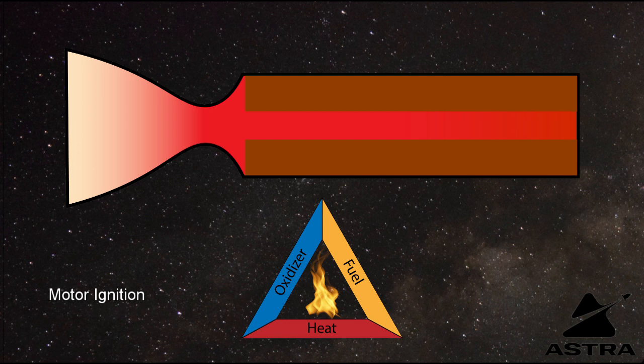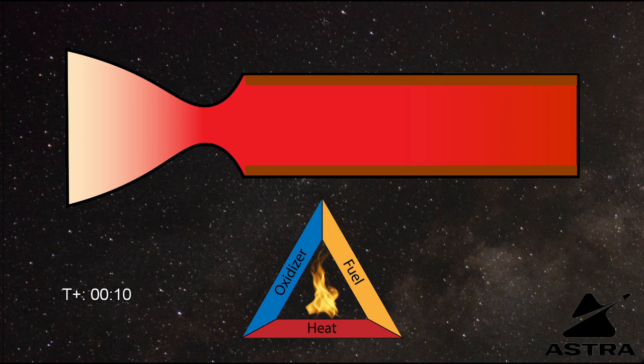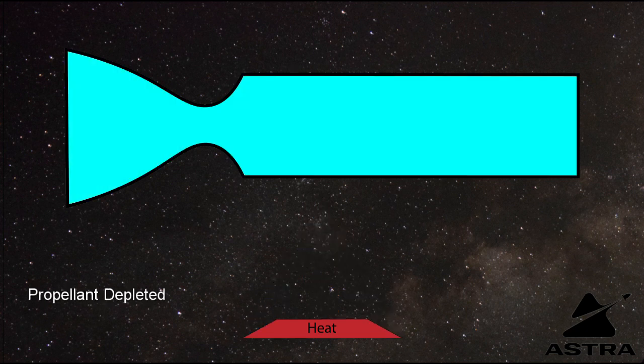Once the combustion reaction gets going, it will burn along the inside surface of the propellant grain. This will vaporize the solid components of the fuel grain and allow them to combust. This reaction will continue until there is no longer any propellant grain left to combust in the combustion chamber.